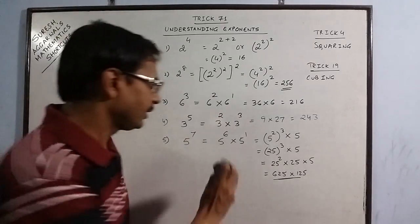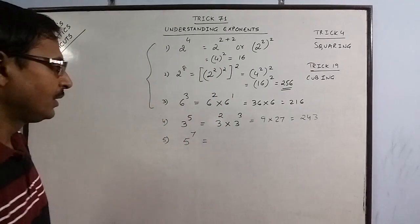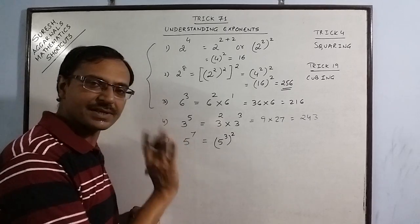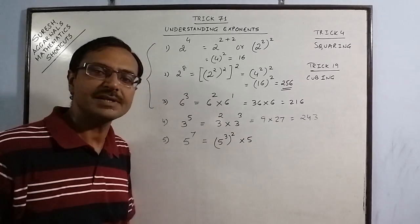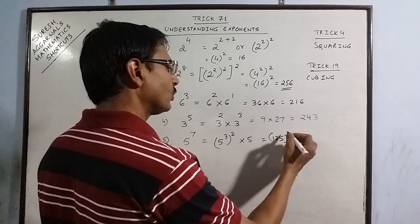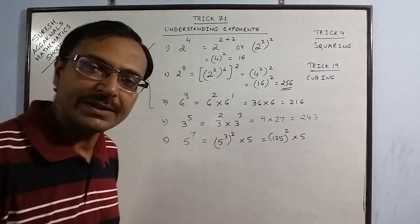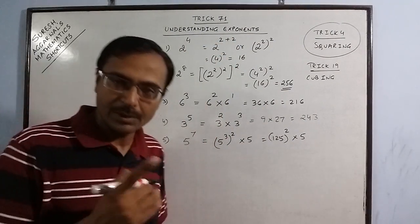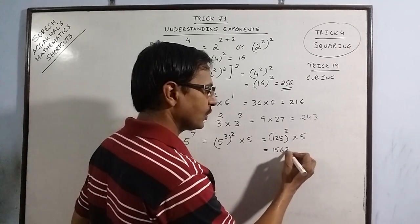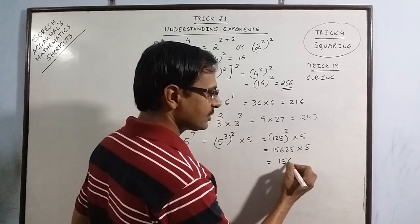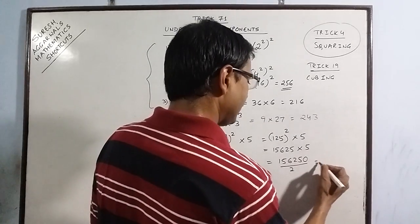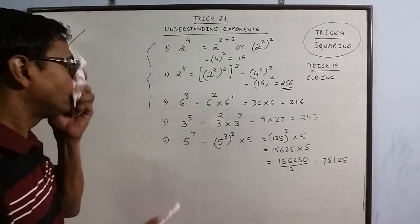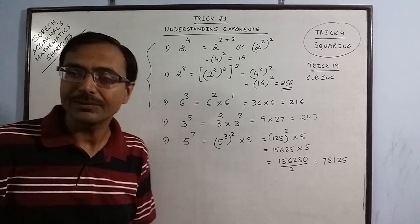I will show you one more method through which you can find this. Just write 5 cube square. 3 into 2 is 6, so we are done with power 6. Now we are left with one power, so multiply by single step. 5 cube is 125. Now you need to know the square of 125. For finding the square in shortcut method, you can use my trick 4 for squaring any 3 digit number or 2 digit number mentally. This is 15,625. Multiply by 5. Multiplication by 5 is also done mentally, put a 0 and divide by 2. So your answer will be 78,125. You see, the knowledge of squaring and cubing can help you solve most of the exponents mentally.